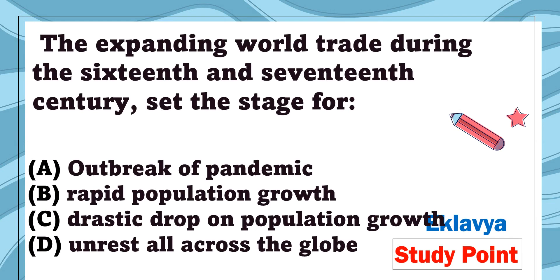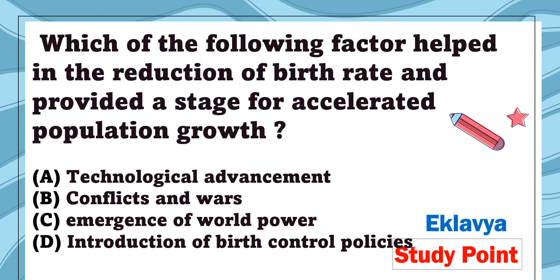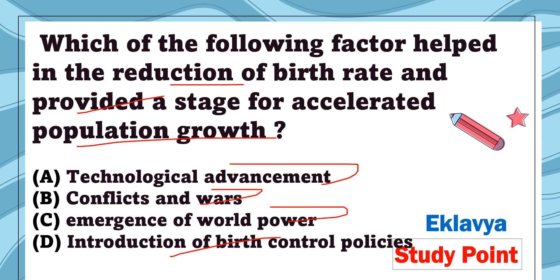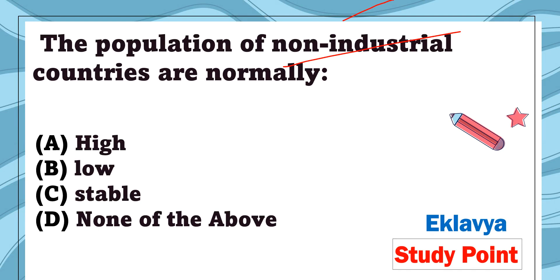Question 24: The expanding world trade during the 16th and 17th centuries led to — outbreak of pandemic, rapid population growth, drastic drop in population growth, or unrest all across the globe. The correct answer is rapid population growth. Question 25: Which factor helped in the reduction of birth rate and provided a stage for accelerated population growth — technological advancement, conflicts and wars, emergence of world power, or introduction of birth control policies? The correct answer is technological advancement.